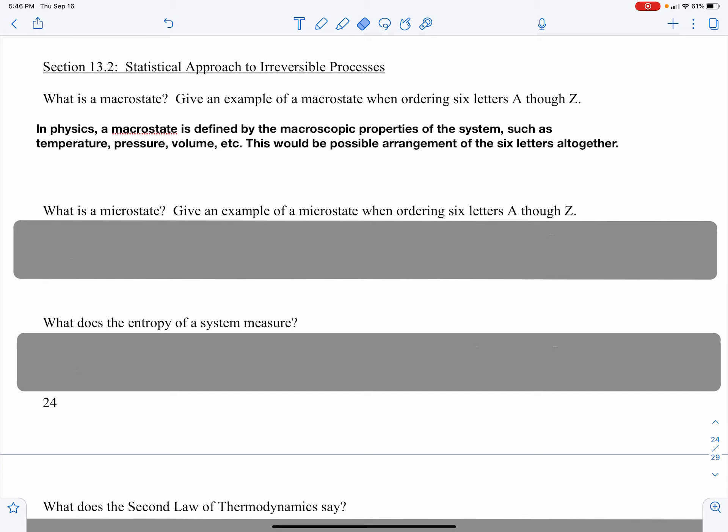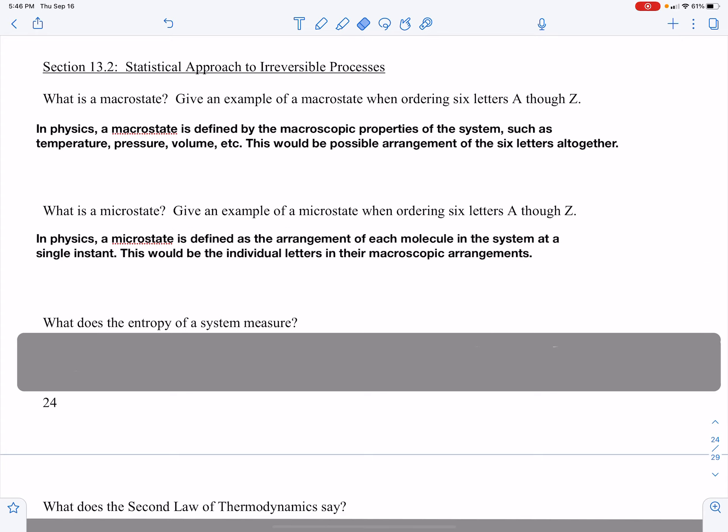What is a microstate? Well, in physics, the microstate would be the arrangement of each and every molecule within a system at a single instant. This, of course, would be the individual letters in their macroscopic arrangements.